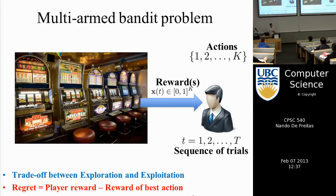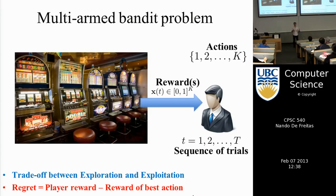One useful notion to measure how well an agent is doing is regret. Regret is the reward you got with respect to the reward of the best action. For example, my notion of regret in a casino would be how much money did I make versus how much my partner made — regret gives you a way to measure your performance relative to someone else.